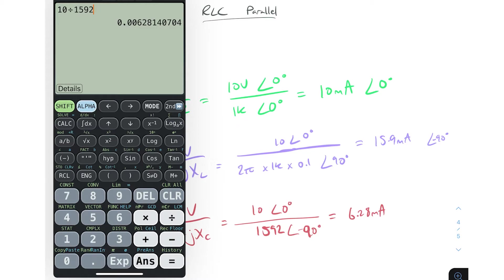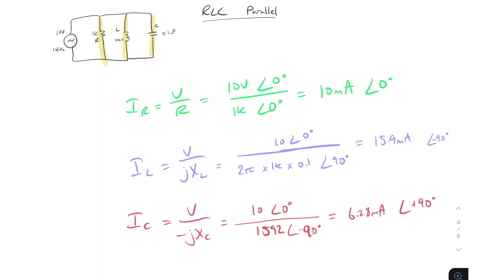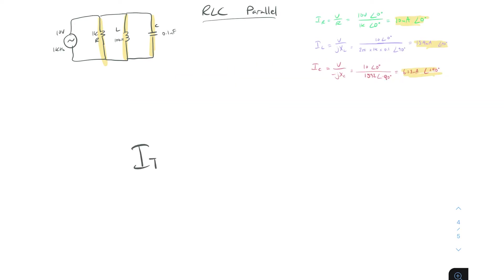For the phase shift of the capacitor branch, you need to be careful: it's zero degrees minus minus 90 degrees, which is plus 90 degrees. So we have our current through the resistor, current through the inductor, and current through the capacitor.